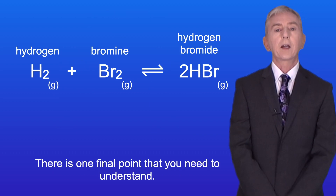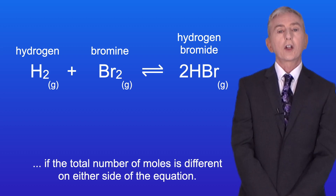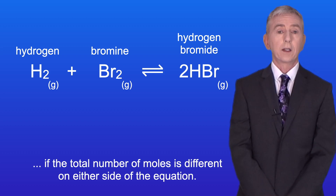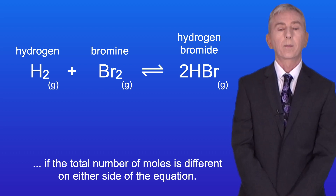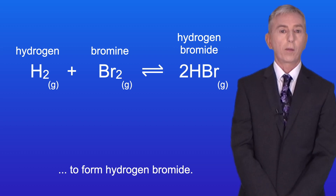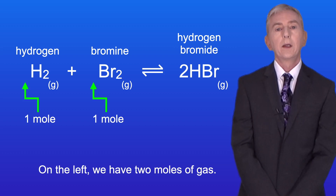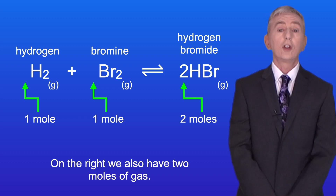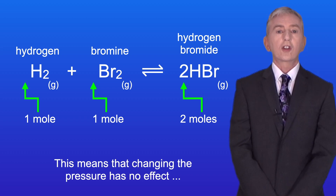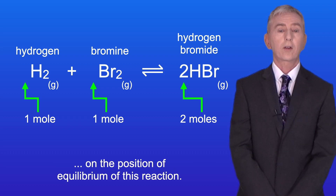There is one final point that you need to understand. The position of equilibrium is only affected by pressure if the total number of moles is different on either side of the equation. In the reaction shown, hydrogen and bromine react to form hydrogen bromide. On the left we have two moles of gas and on the right we also have two moles of gas, so changing the pressure has no effect on the position of equilibrium of this reaction.